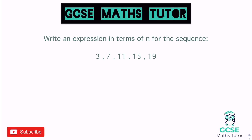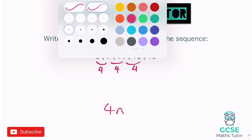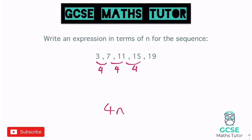Same process again for the next one — it goes up by 4 each time, so it's 4n. Going backwards, subtracting 4 from the first term gives us negative 1, so the nth term expression for this sequence is 4n − 1.